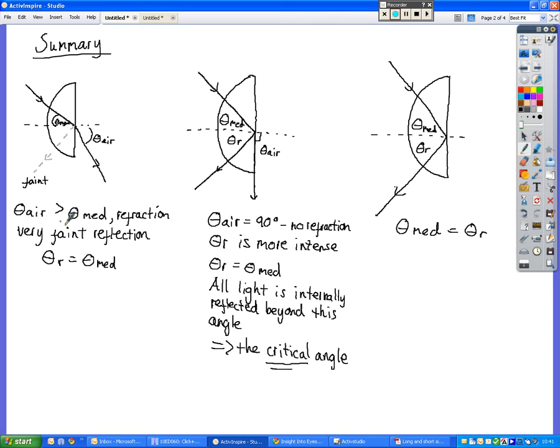At this point, the angle in air is greater than the angle in the medium, which we would expect because that's what refraction and refractive index tells us will happen. And the reflected ray that comes back the way that is very, very faint should be roughly equal to the angle in the medium.